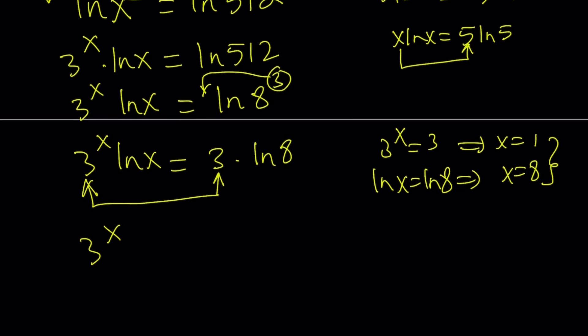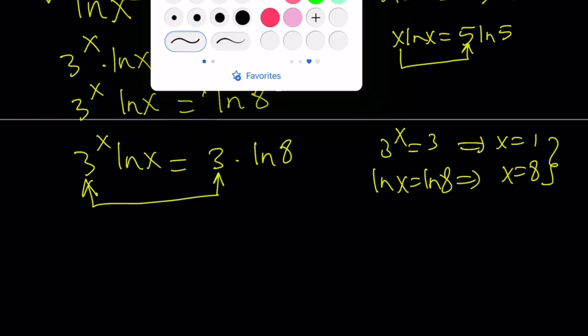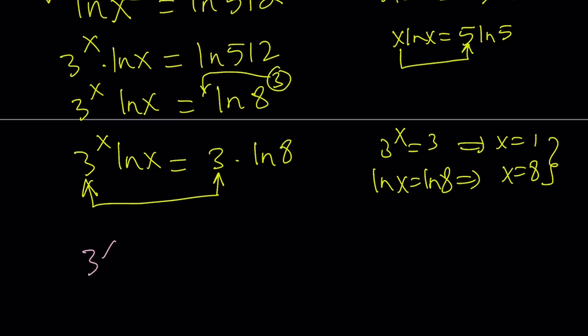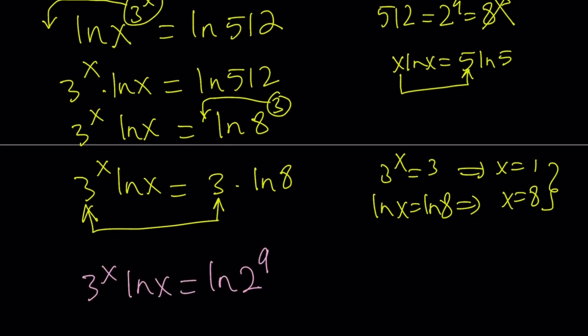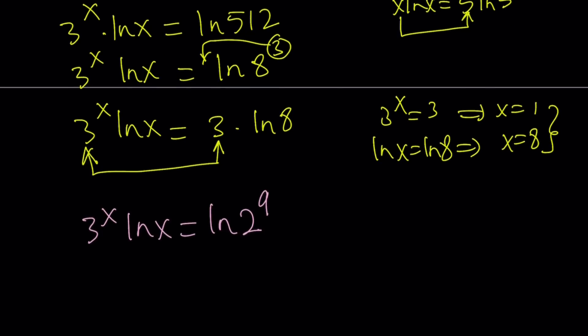Which means I end up with 2 to the 9th power. So let's go ahead and do that. We get 3 to the x ln x equals ln 2 to the 9th power. So it's not totally guess and check. I looked at different ways I can write 512 as a power. And then I tried 8 to the 3rd, it didn't work. Now I'm testing 2 to the 9th power. We're going to go ahead and move the 9 over here.